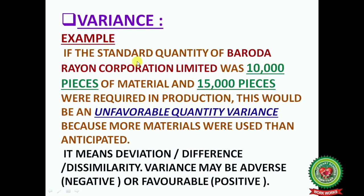Key term — Variance. Example: If the standard quantity of Baroda Rayon Corporation Limited was 10,000 pieces of material and 15,000 pieces were required in production, this would be an unfavorable quantitative variance because more material was used than anticipated — 5,000 more than the standard. Variance means deviation or difference, and it may be adverse/unfavorable or favorable. For example, if the standard is 10,000 but actual material used is 8,000, that means 2,000 saved — so favorable variance.